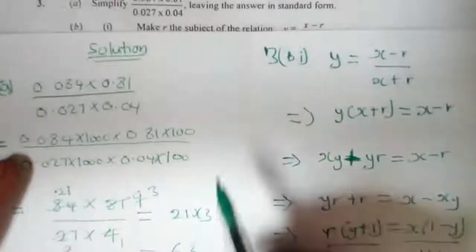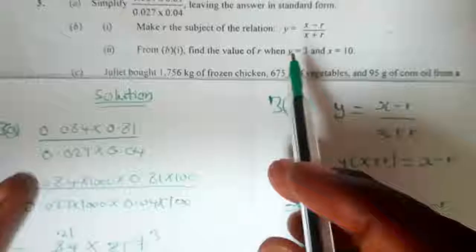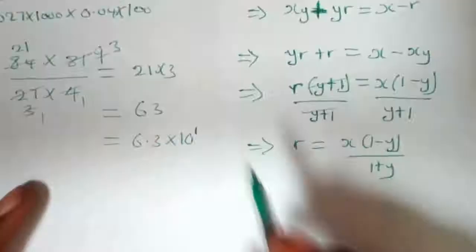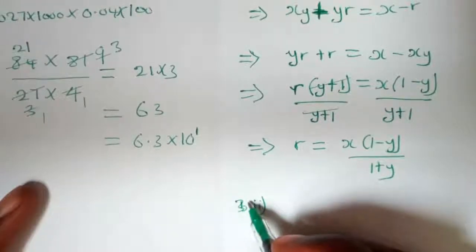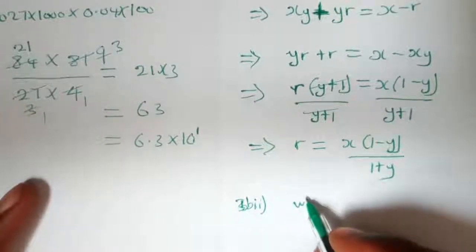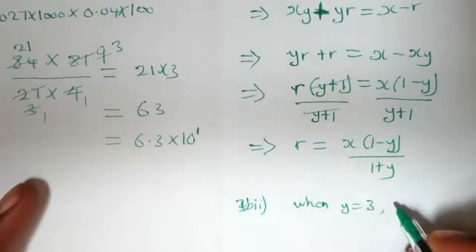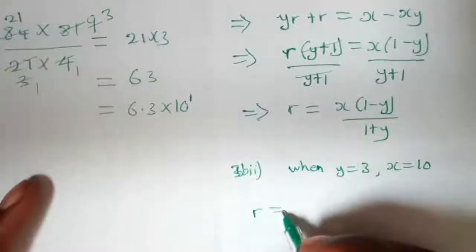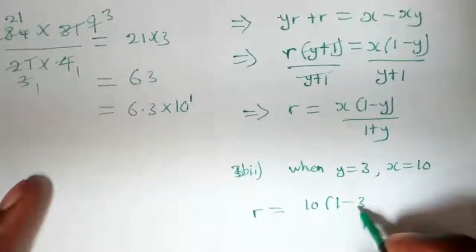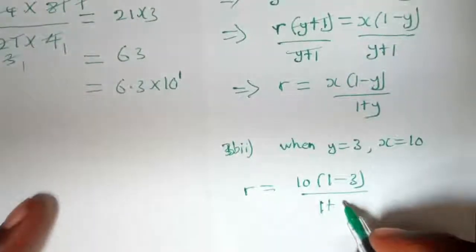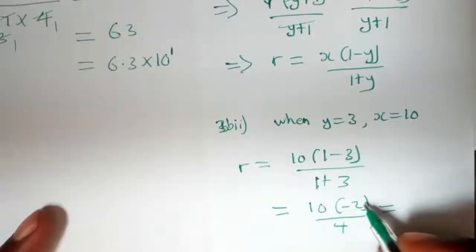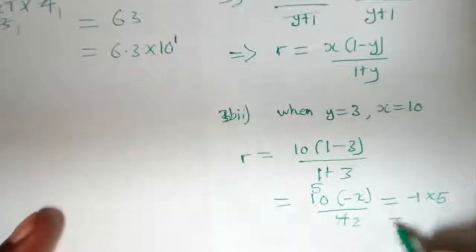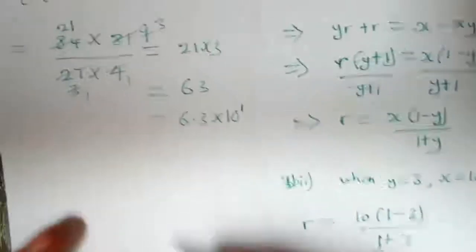The question then asks us to find the value of r when y equals 3 and x equals 10. Substituting into the relation: r equals 10 times (1 minus 3) all over (1 plus 3), which gives 10 times negative 2 all over 4. Simplifying, 2 into 10 gives 5, and 5 times negative 1 gives us negative 5. So r equals negative 5.